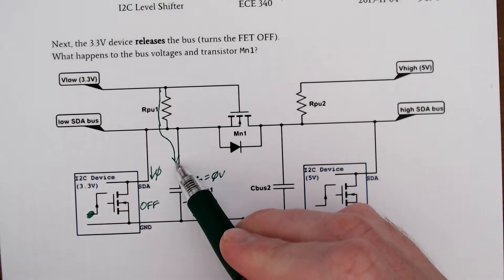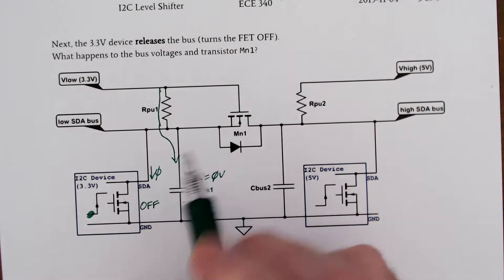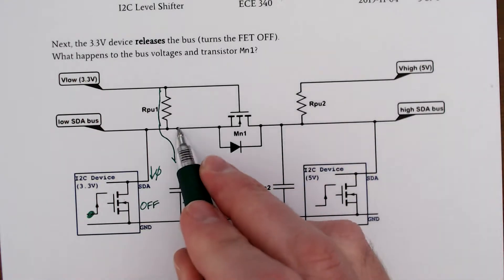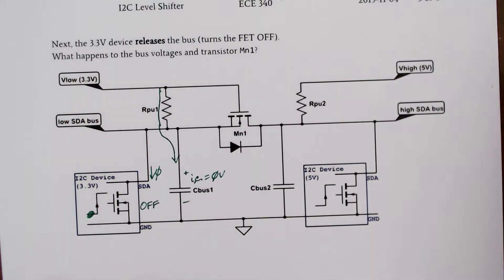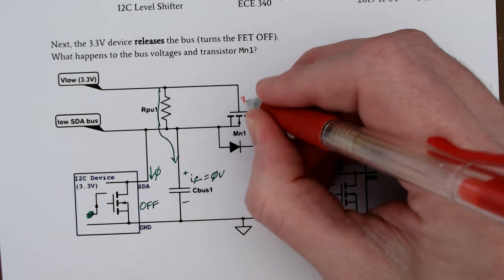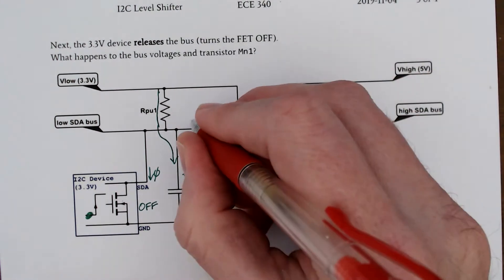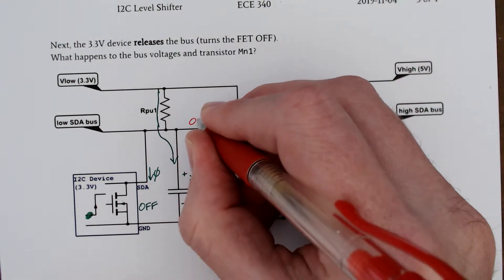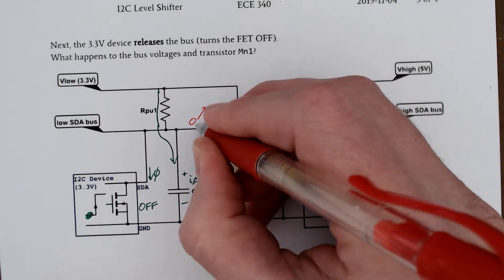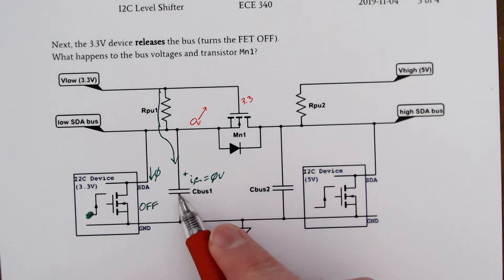Keep that current in view. Also, remember that this node started at zero, this is still 3.3. This starts at zero and is going to increase, because we're charging this capacitor.